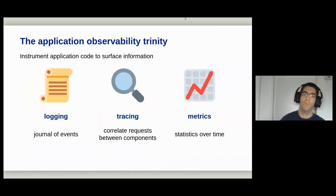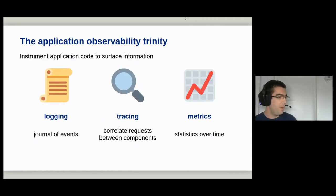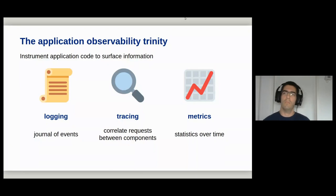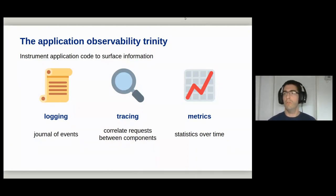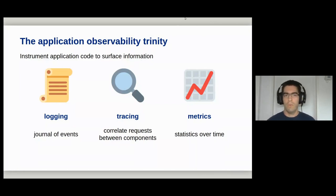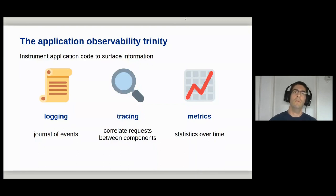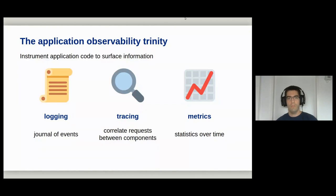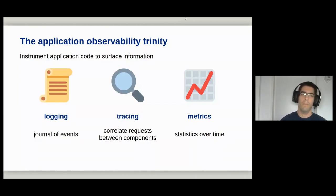We'll do that with observability and metrics. Nowadays observability means three things: logging, which we've been doing for a long time; tracing, which is rather new; and metrics — the numbers you collect over time and then analyze. Today I'm going to focus on metrics.